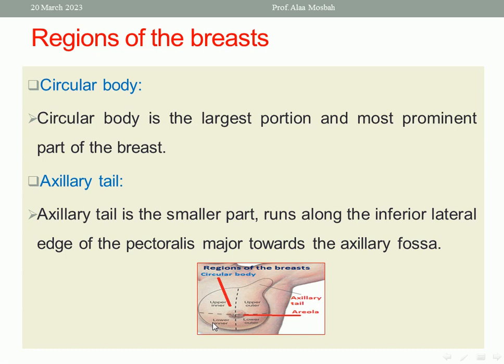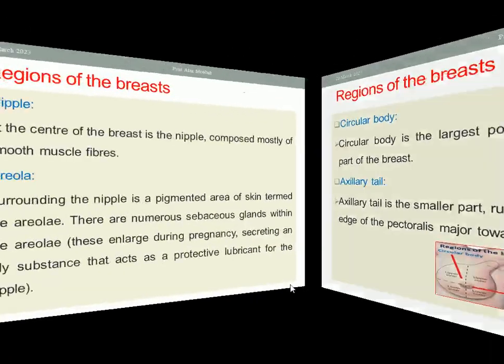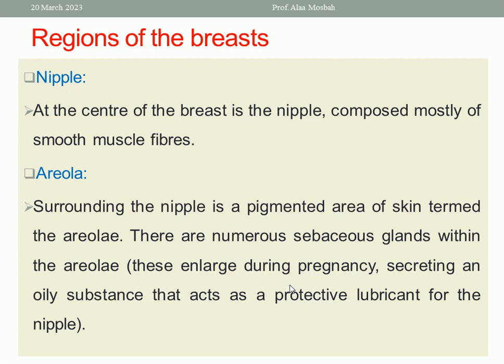The circular body is the largest and most prominent part of the breast. The axillary tail runs along the inferior lateral edge of the pectoralis major towards the axillary fossa. The nipple is at the center of the breast, composed mostly of smooth muscle fibers. The areola surrounding the nipple is pigmented skin, and there are numerous sebaceous glands within the areola. These sebaceous glands enlarge during pregnancy, secreting an oily substance that acts as a protective lubricant for the nipple.